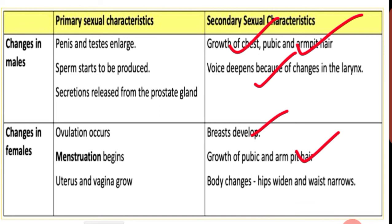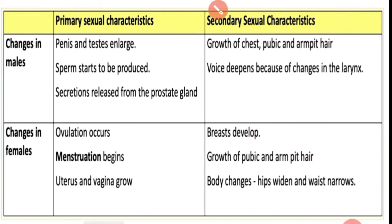Armpit hair also grows and develops. Then body changes occur: hips get widened and the waist narrows. These are the changes that occur in females at puberty. In the next class we will see the male reproductive system fully.